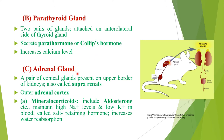Next is the adrenal gland — a pair of conical glands present on the upper border of the kidneys. In this diagram you can see the adrenal glands present above the kidneys, so they are also called suprarenals. The adrenal gland is made up of an outer adrenal cortex, which is mesodermal in origin and secretes three hormones. First are the mineralocorticoids, which include aldosterone — it maintains high sodium and low potassium levels in the blood and is also called the salt-retaining hormone. It also increases water reabsorption.